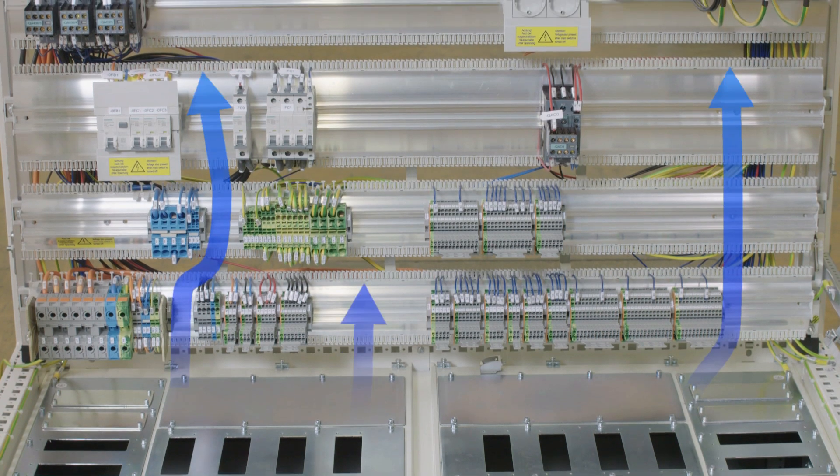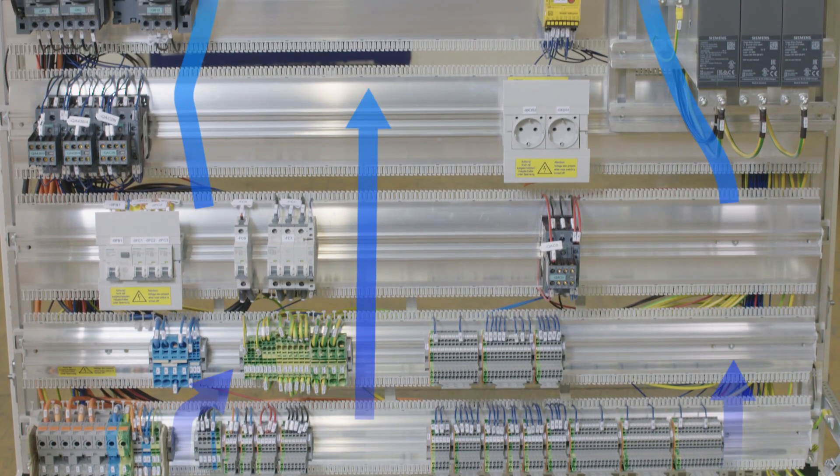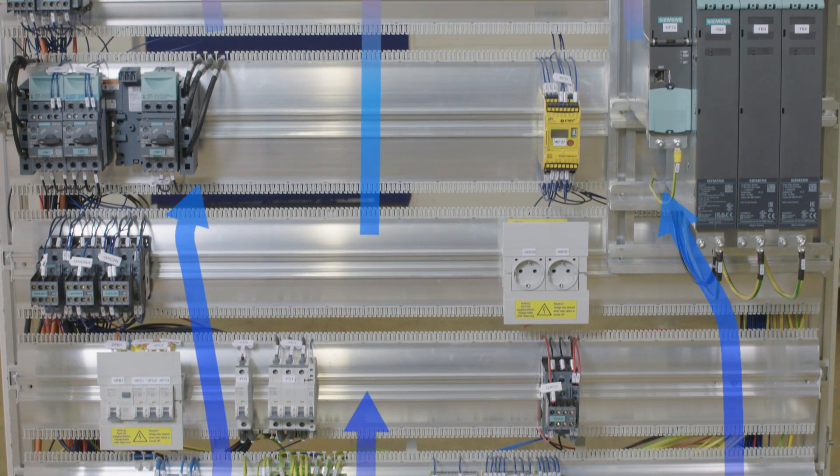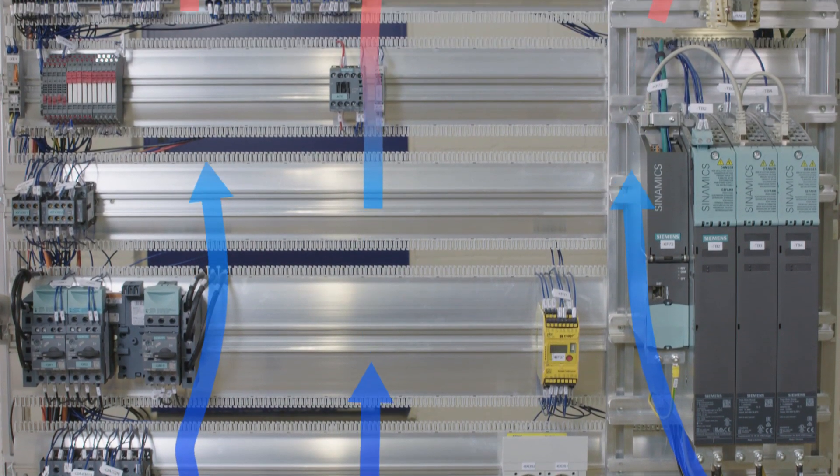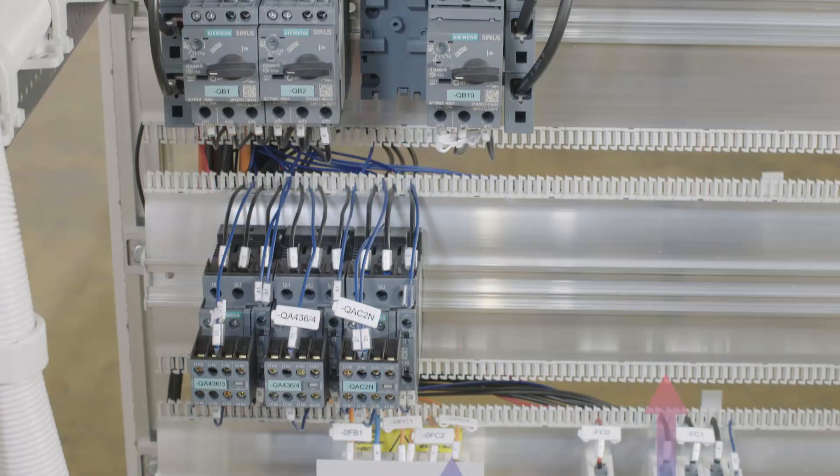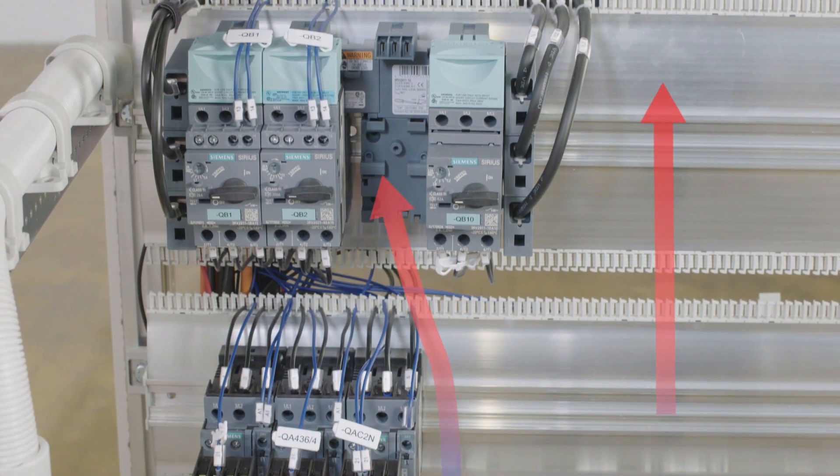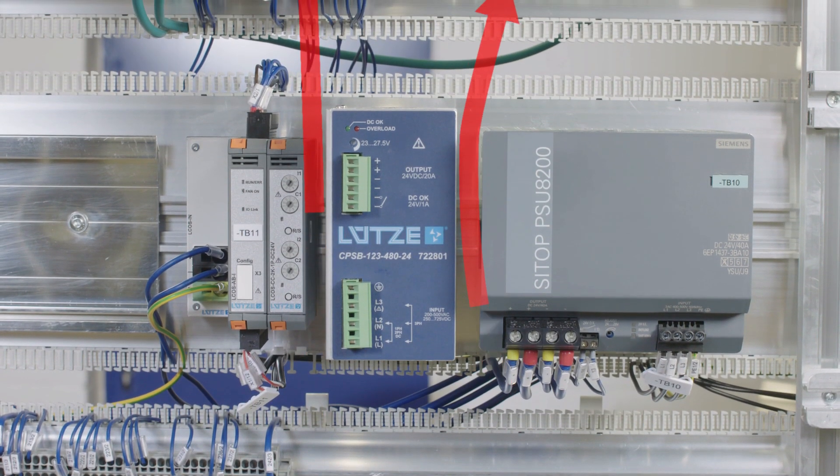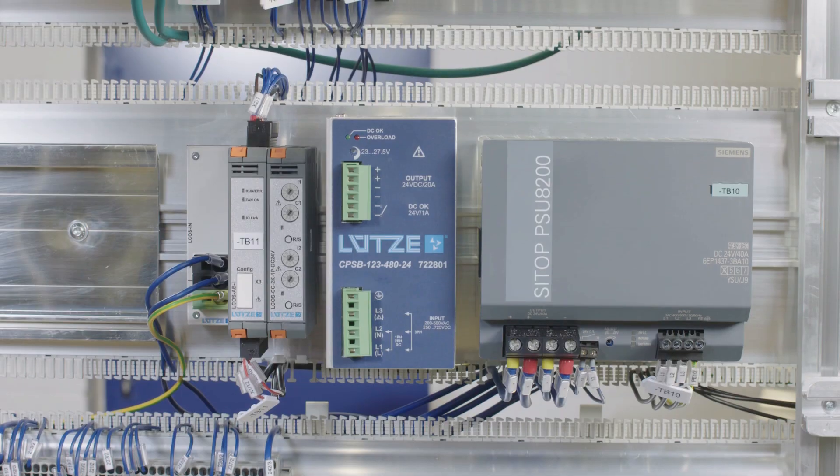Due to the division into an assembly and a wiring level, air flows past the modules and wires almost unobstructed. As a result, waste heat is quickly dispersed to the exterior panels of the cabinet. The resulting homogeneous interior climate ensures a longer component life and thus reduces the risk of machine failures.